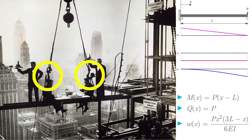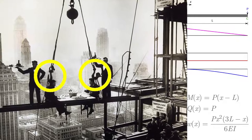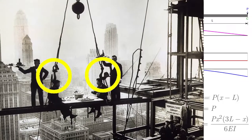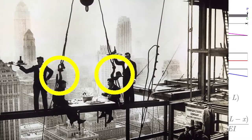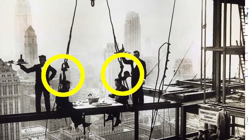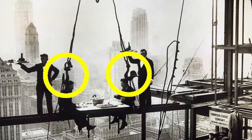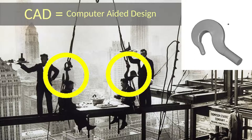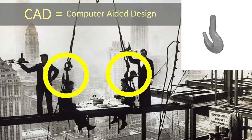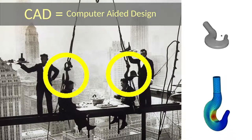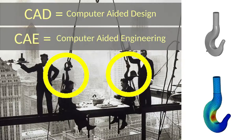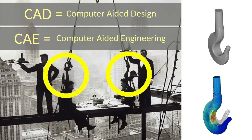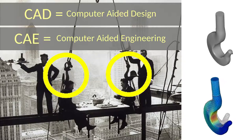But what about the hooks the beam is hanging from? We would also want the designer to have taken into account that we were going to stand on whatever those hooks would eventually hold. Hooks are not as simple as beams, and we don't know how to solve them with paper and pencil. Not in 1930, but for sure since more than 20 years now, the manufacturer has had the CAD model — computer-aided design — of the hook. What we are missing is the CAE, computer-aided engineering.